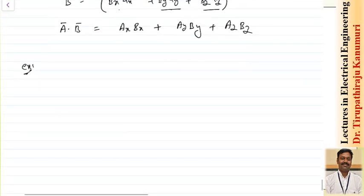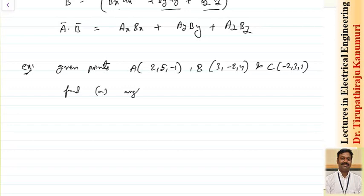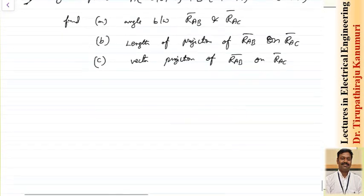Let us take an example to understand all concepts related to dot product. Given points A(2, 5, -1), B(3, -2, 4), and C(-2, 3, 1), find: the angle between RAB and RAC, the length of projection of RAB on RAC, and the vector projection of RAB on RAC.